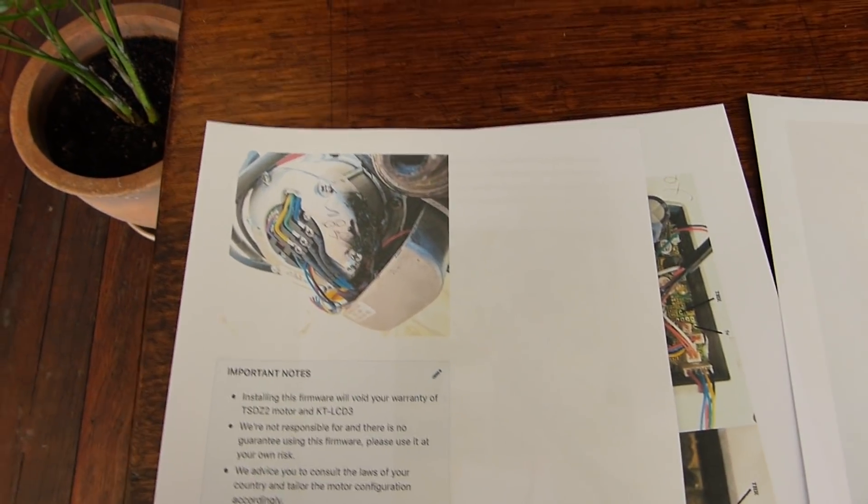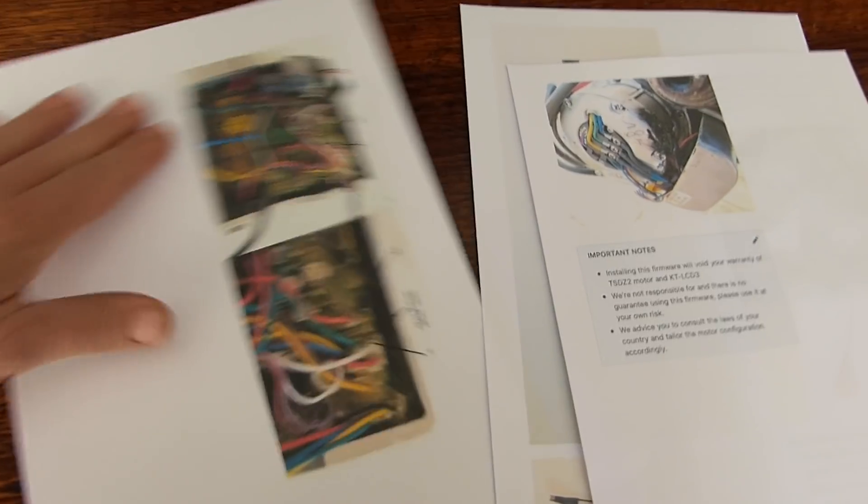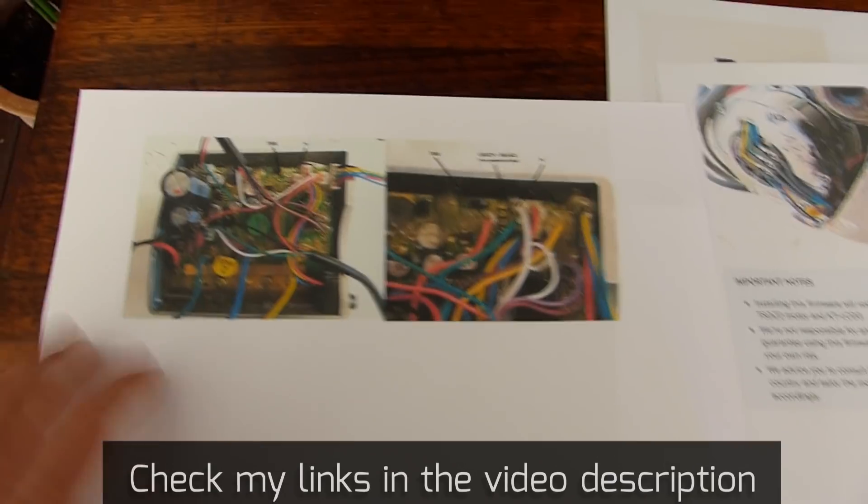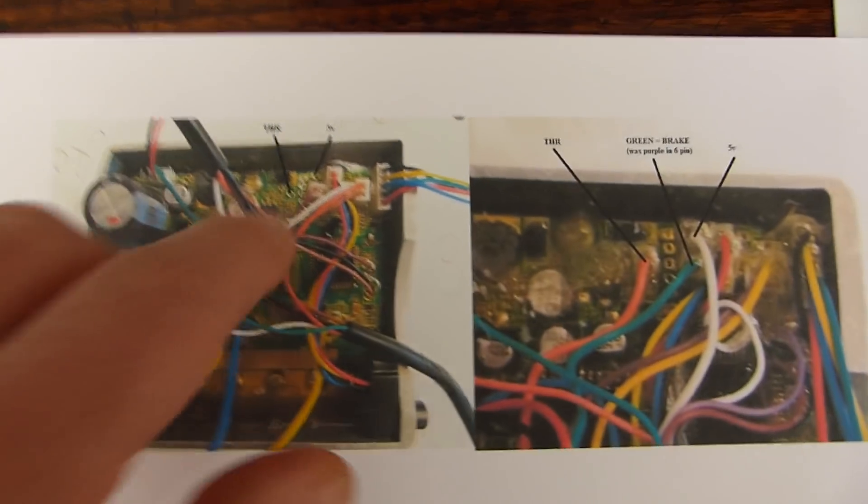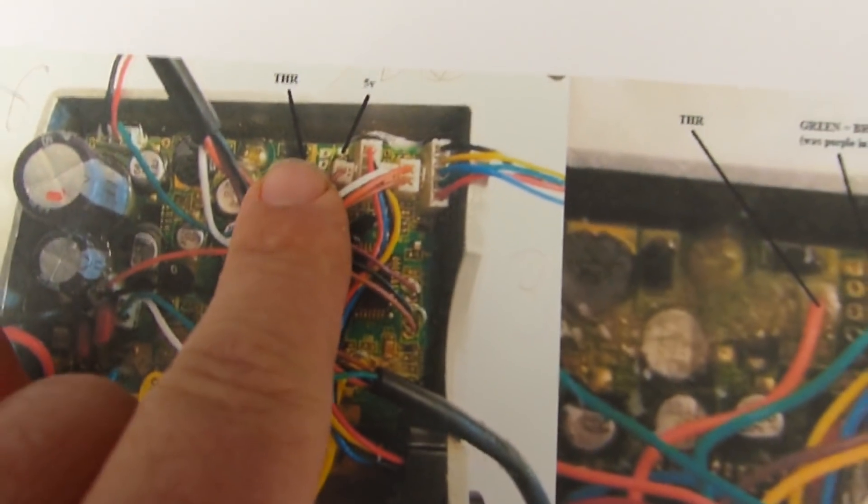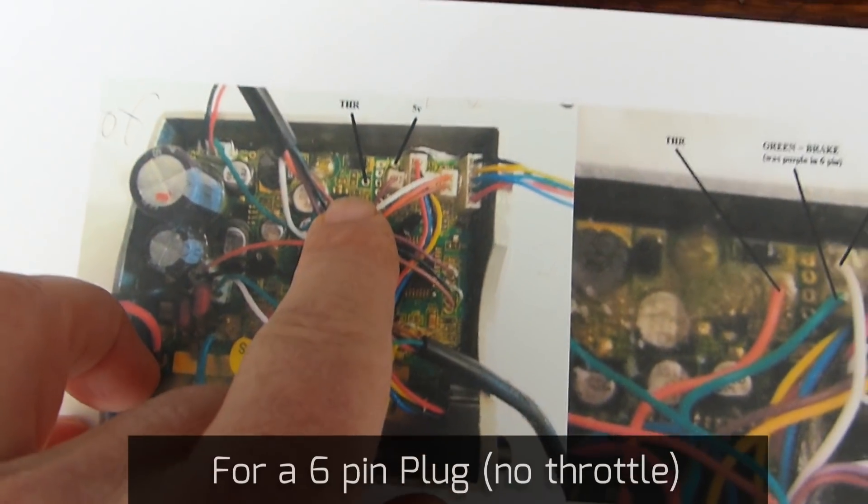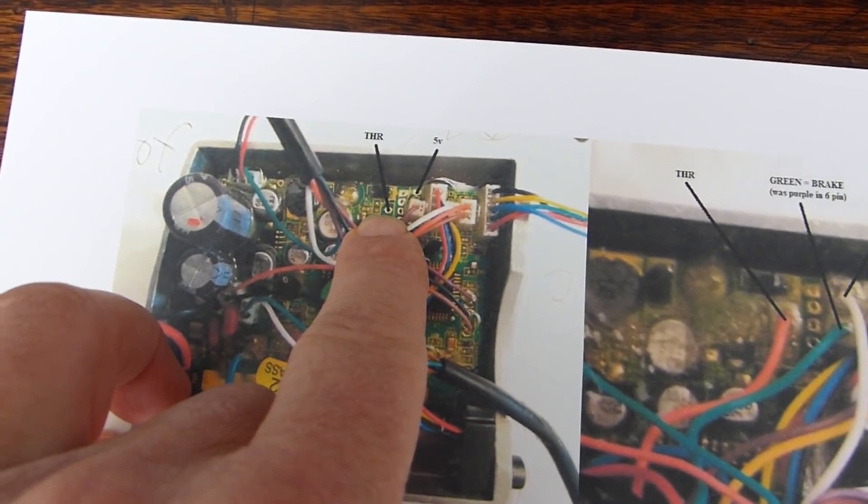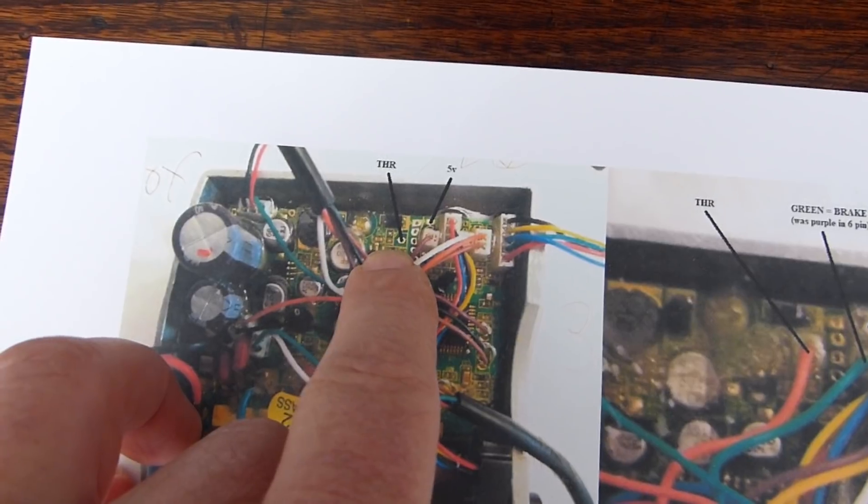You can still leave it intact on the bike. The motor doesn't have to come off the bike, but just have a look at the wiring. I will post links to these pictures. For my controller, which doesn't actually have a throttle, we need to connect the wire to the throttle wire here.